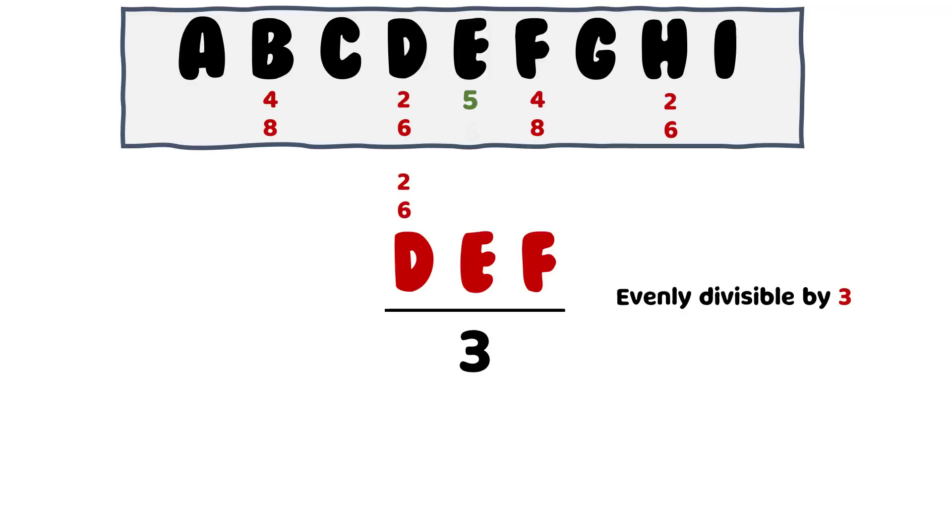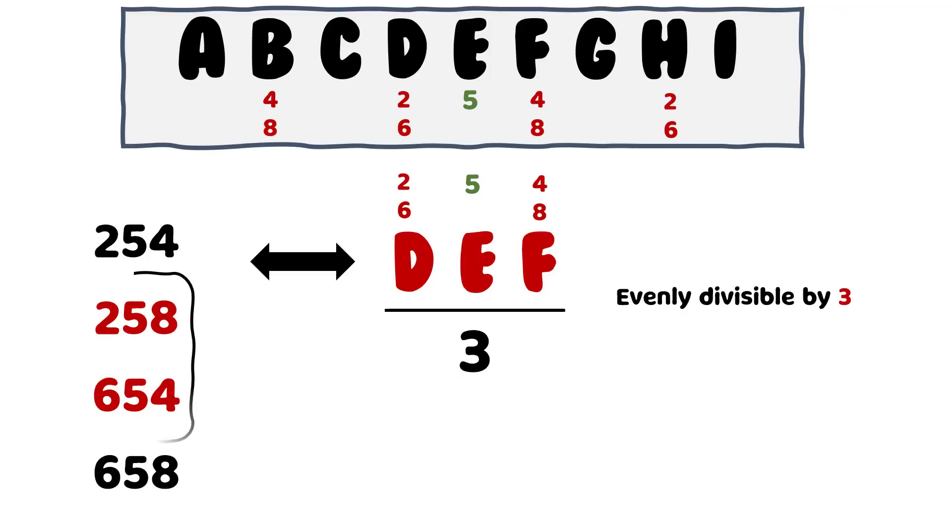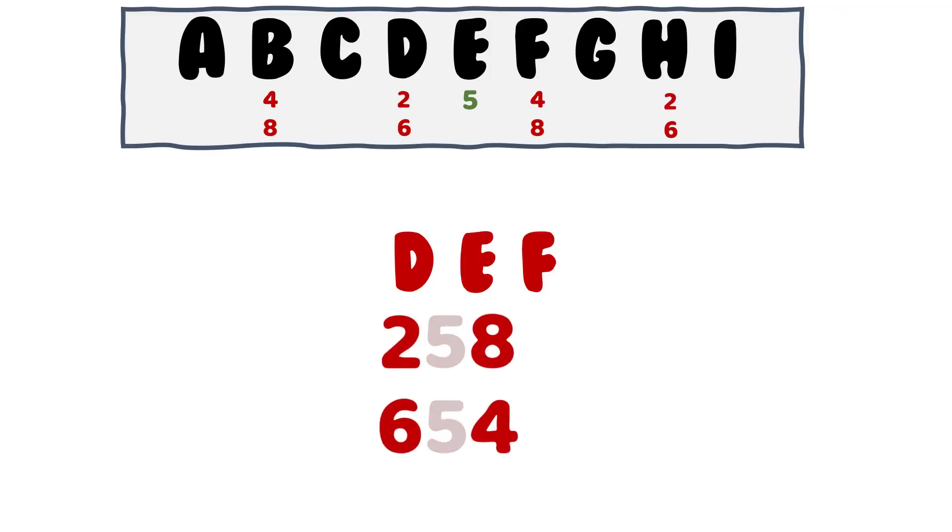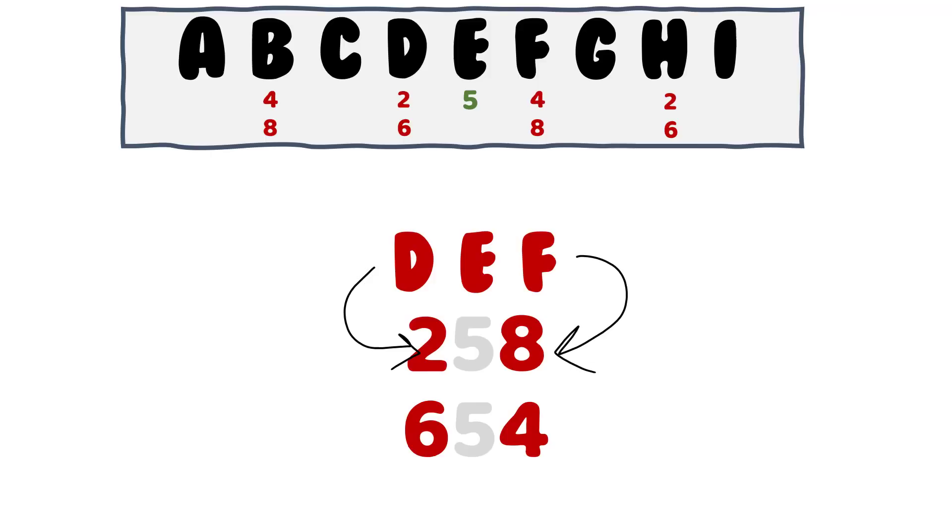D is either 2 or 6, E is 5, F is either 4 or 8. So the number DEF can have these possible values. Out of which only the numbers 258 and 654 are divisible by 3. This means if D comes out as 2, then F would be 8. And if D comes out as 6, F would be 4. So on the above display, let's show this mutual relation between D and F with some arrows.